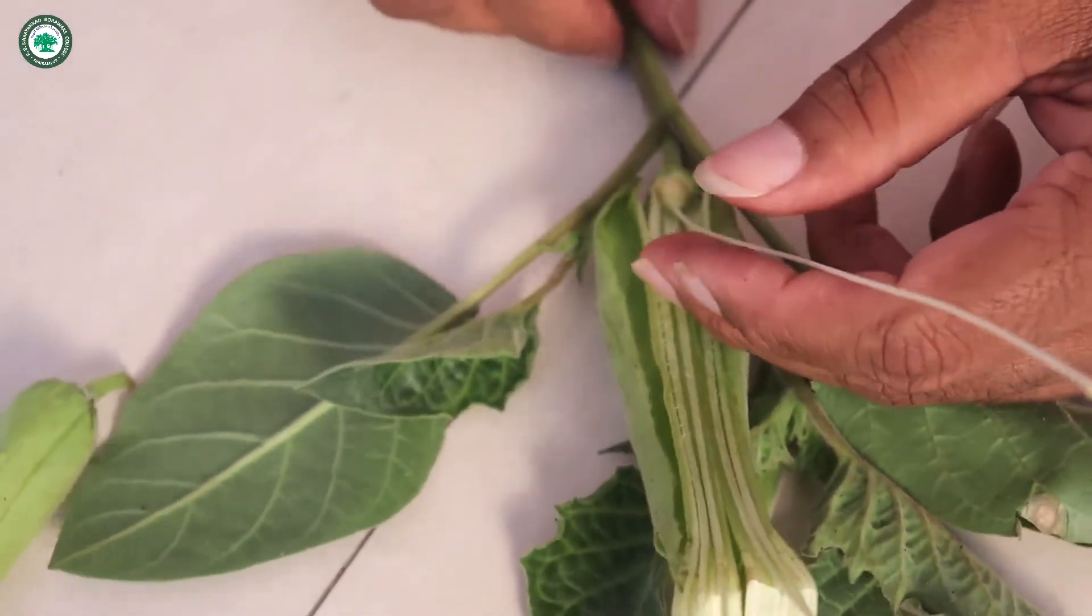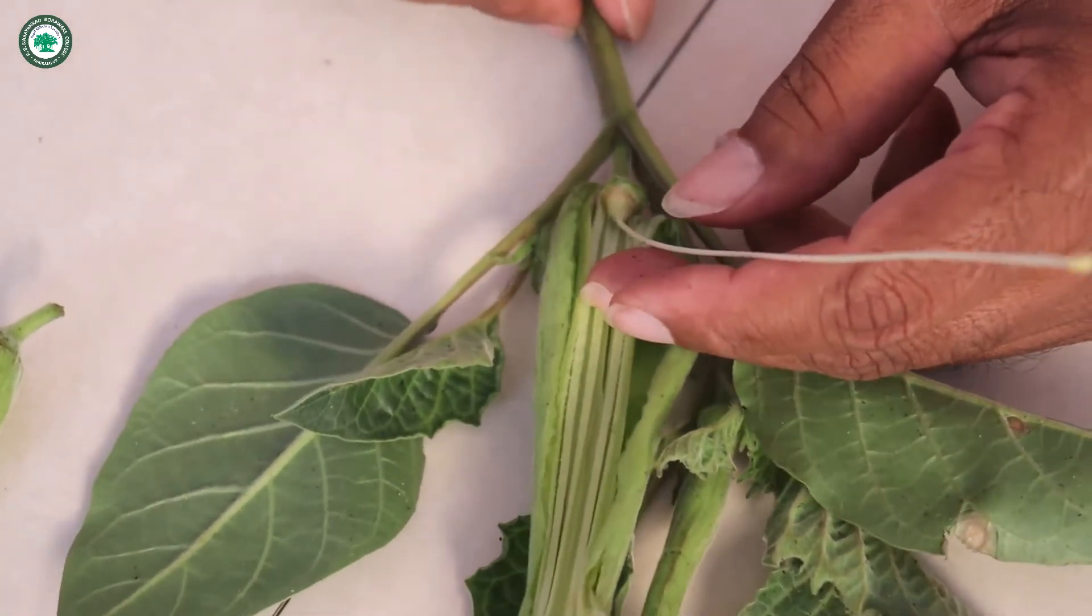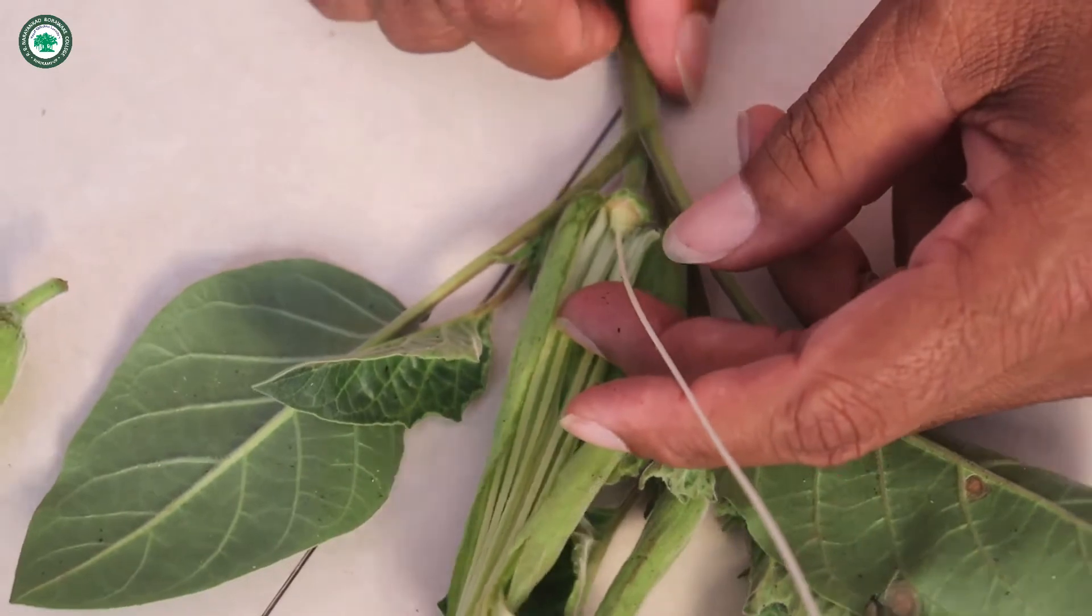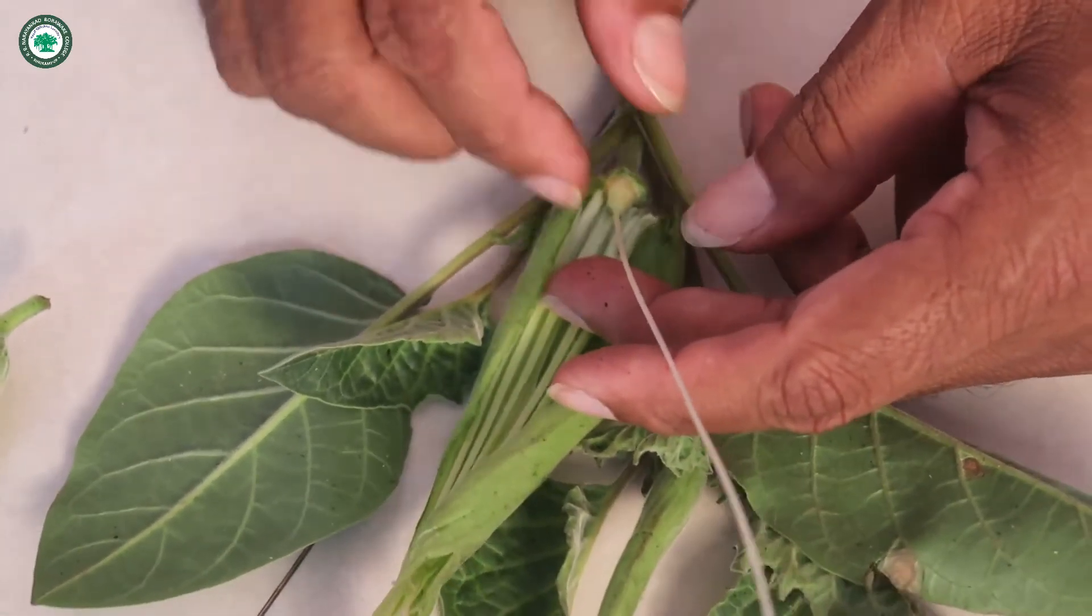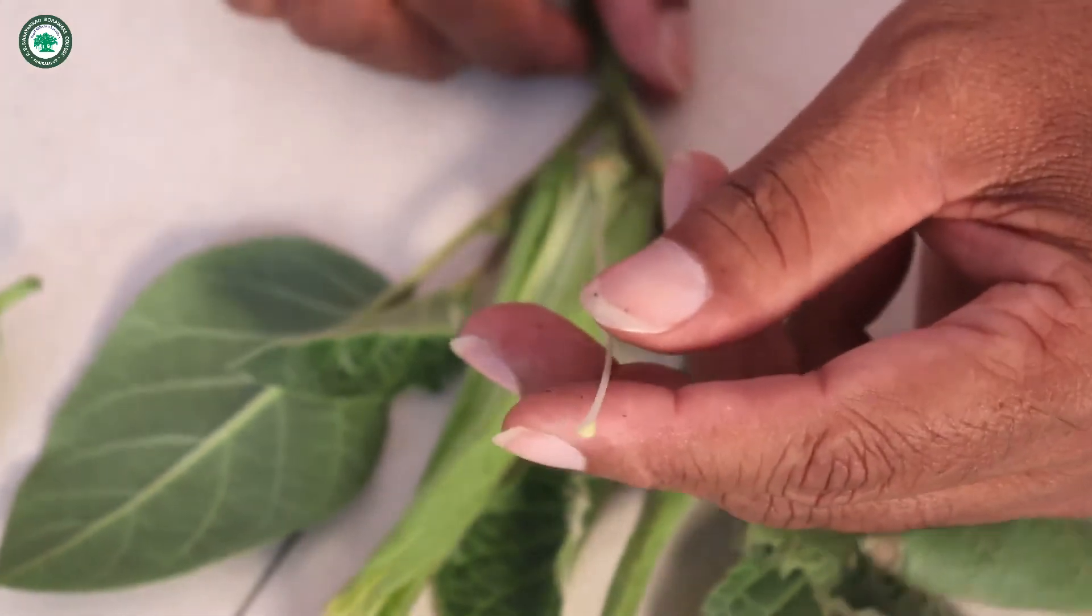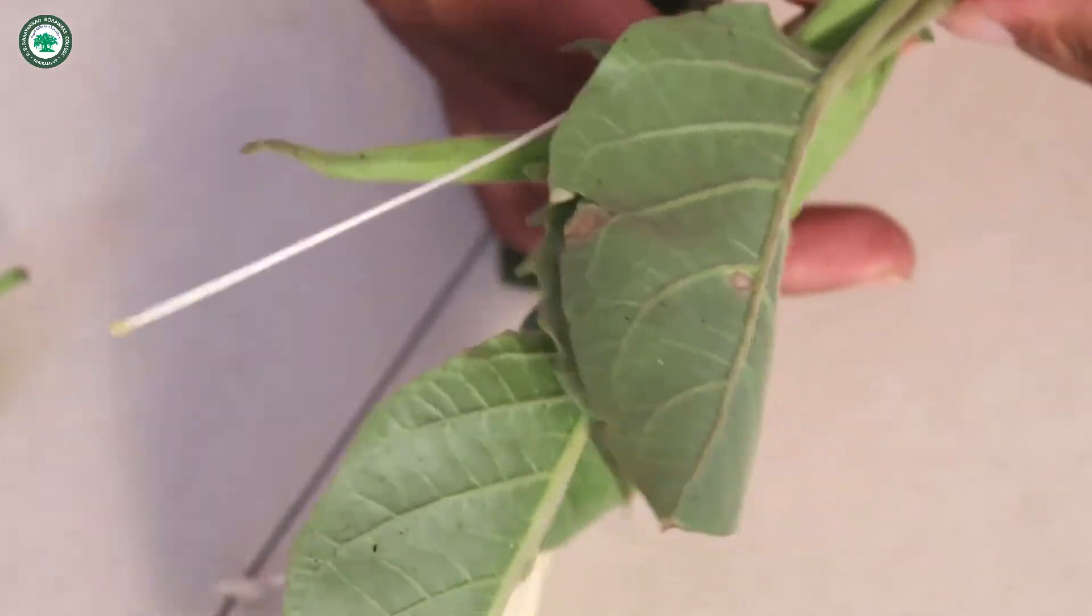Now this is the gynoecium. Now it is the bicarpellary syncarpous. Ovary is superior. Bilocular. Ovules are many. Axile placentation. Style is long. This is the style. Style is very long. It is white in color. And stigma is dome shaped. Now we have to take the section of the ovary.